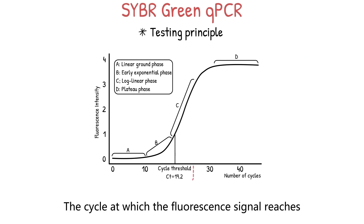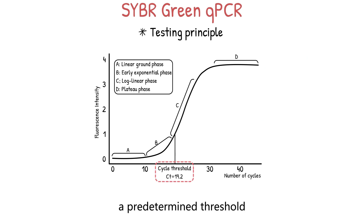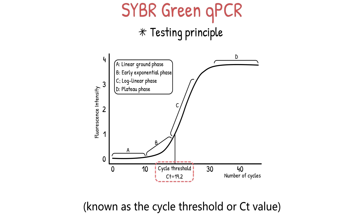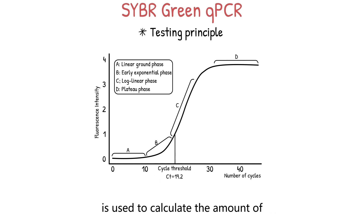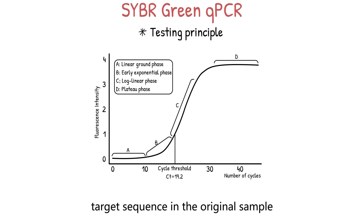The cycle at which the fluorescence signal reaches a predetermined threshold, known as the cycle threshold or CT value, is used to calculate the amount of target sequence in the original sample.